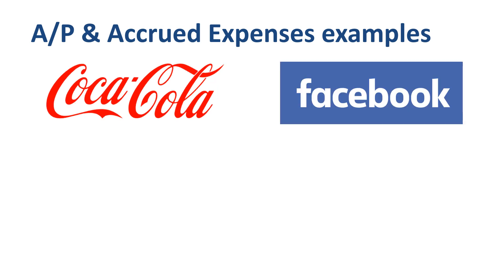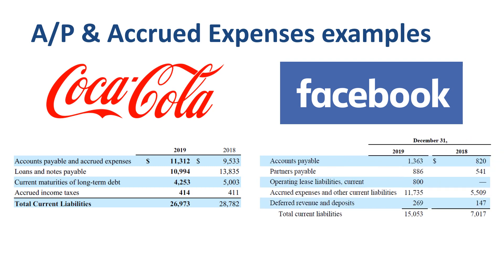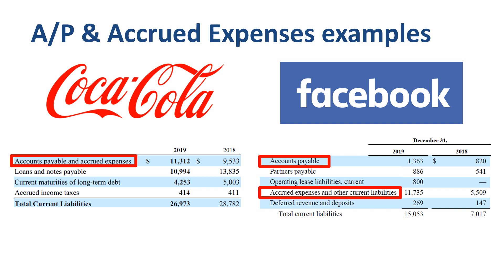Coca-Cola had current liabilities at year-end 2019 of $27 billion. Facebook had current liabilities at year-end 2019 of $15 billion. The interesting thing, in terms of financial statement presentation, is that the Coca-Cola Company has aggregated accounts payable and accrued expenses into one line item on the balance sheet, whereas Facebook has split them into two separate line items. But fear not — the notes to the financial statements give us more specific information in both cases, so we can analyze both companies at the same level of detail.